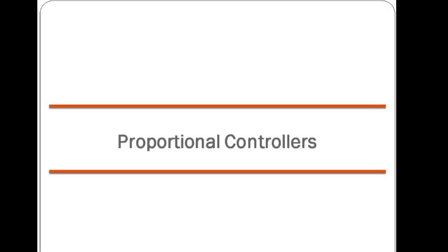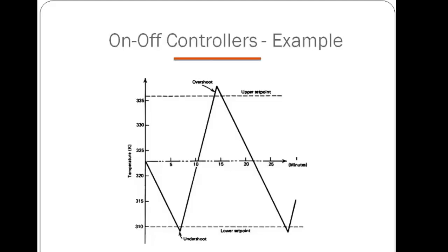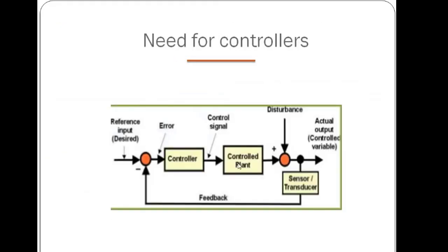From the name itself we can understand it — proportional to the error value. Going back to the diagram, this controller will take control action proportional to the error value, because error is the input to the controller. The responsibility of the controller is to give the control command signal, and this command signal will be directly proportional to the error value.